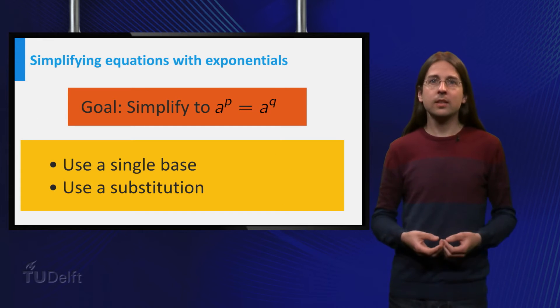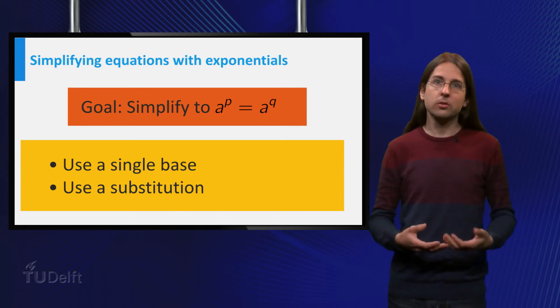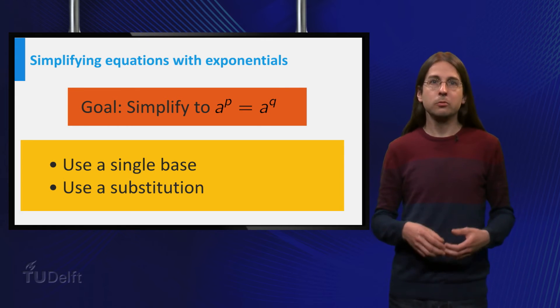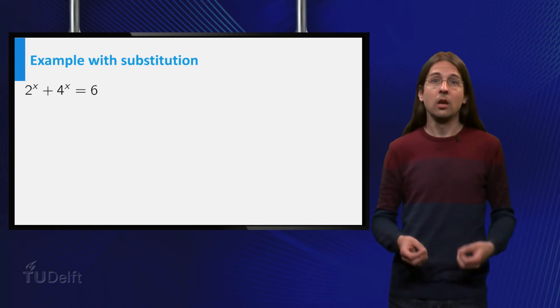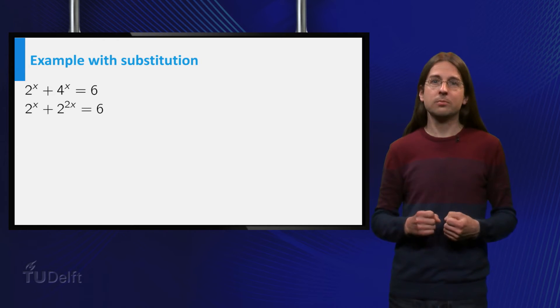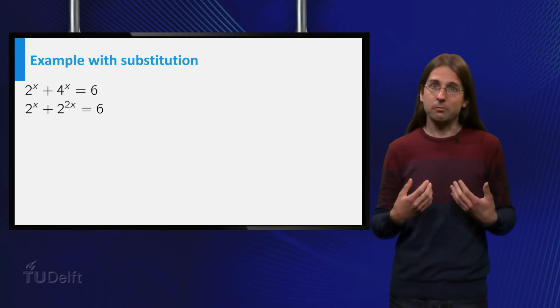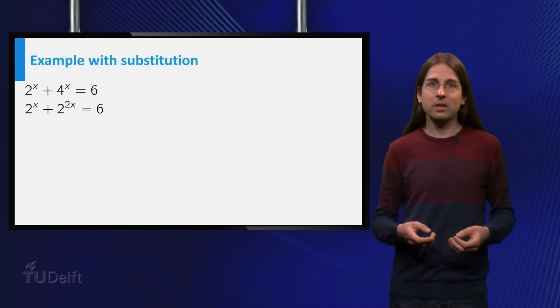The second technique to simplify equations is by using a substitution, just as you could do with trigonometric equations. In the equation 2^x + 4^x = 6, we first change all exponentials to the same base by rewriting it as 2^x + 2^(2x) = 6.